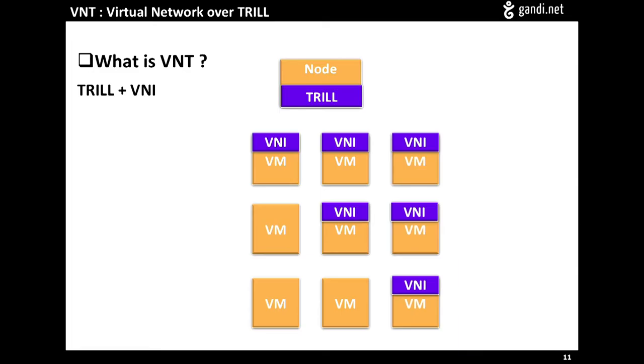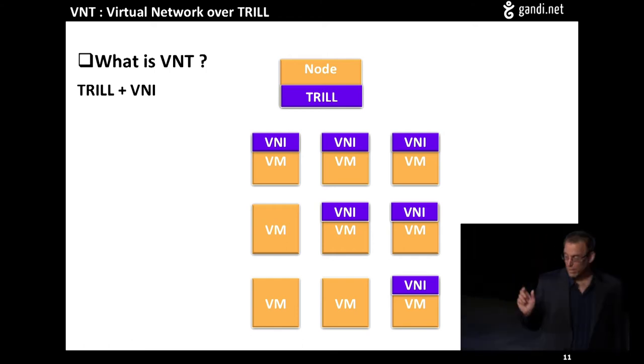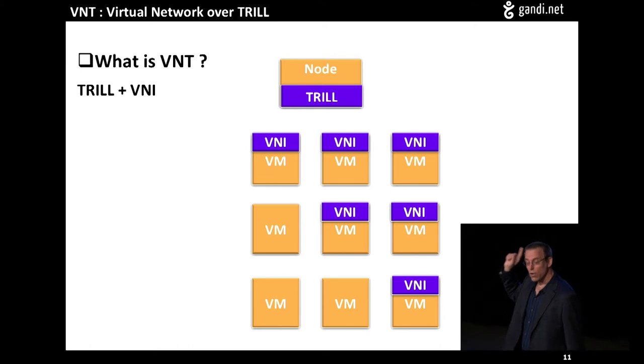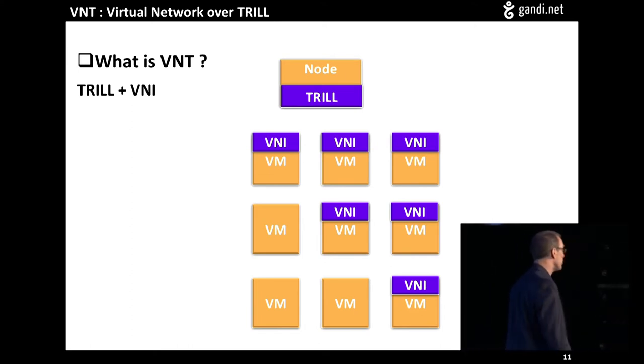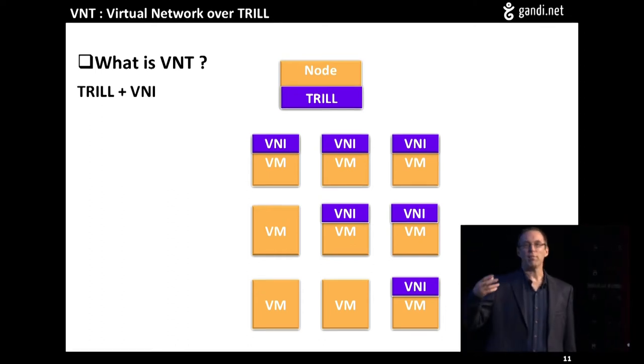So this is the challenge, and we have to really meet all of these challenges at once. So how do we do it? This is a talk about VNT, and that is the solution that we use. VNT is a combination of something called TRILL and something called a virtual network identifier or VNI. We implement TRILL on the nodes, on those hypervisor nodes, and we tag the VM interfaces with that VNI, that virtual network identifier.